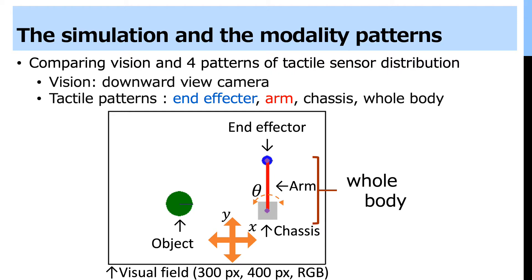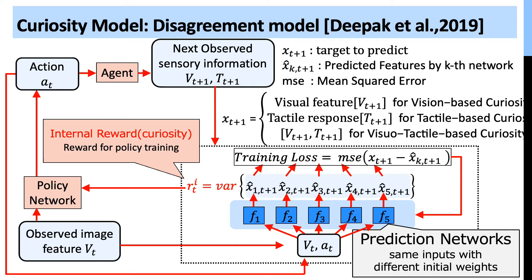The simulation consists of a mobile agent and an object. The agent can move to orbital positions and rotate the arm with the end effector. We prepare visual information and tactile information for the curiosity model. We compare tactile-based curiosity with four patterns of sensation from the end effector, the arm, the chassis, and the whole body.